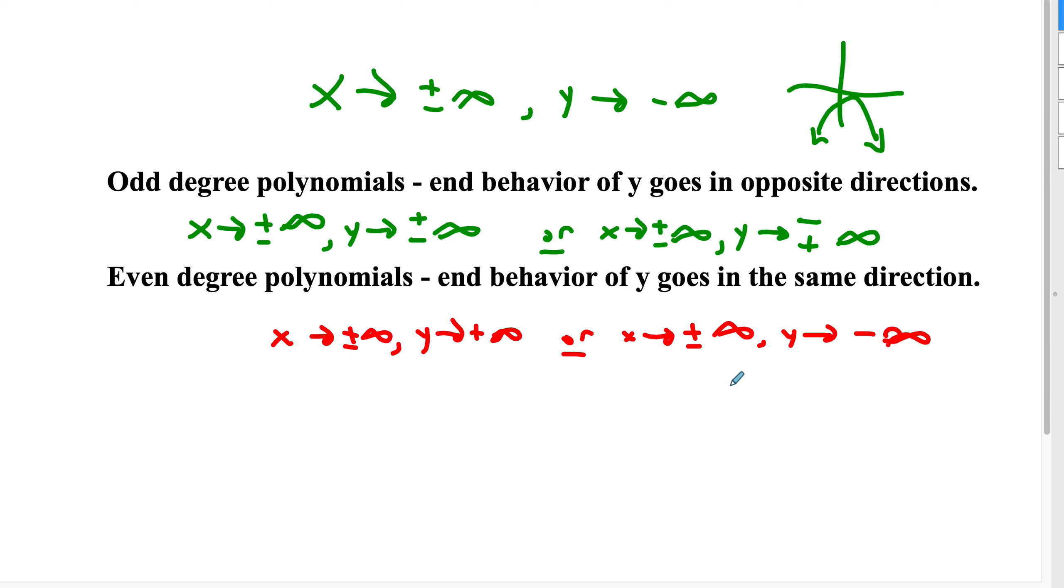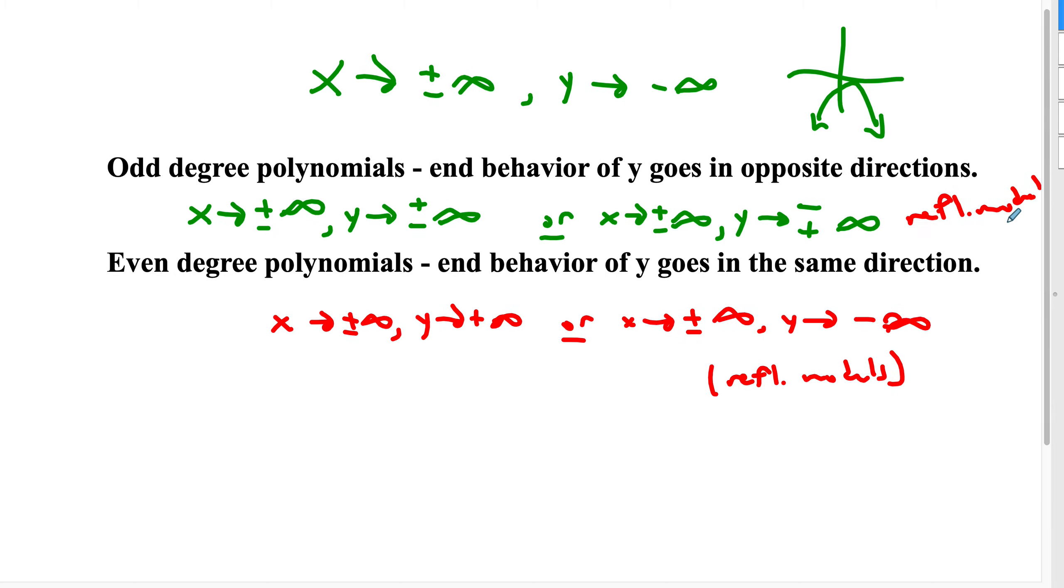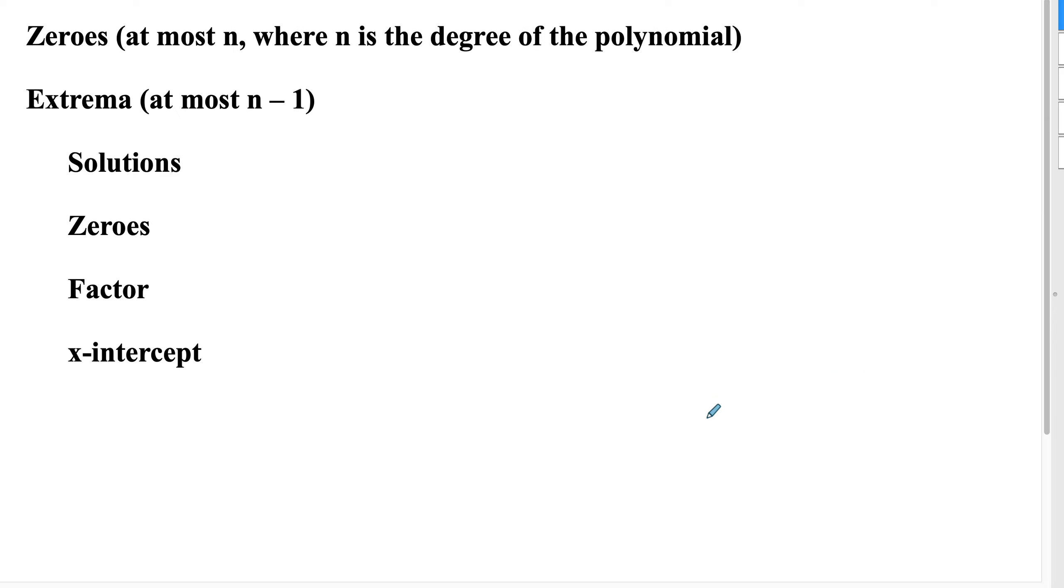As x goes to positive or negative infinity, y either goes to positive infinity, or y goes to negative infinity. Those are our options, depending on whether or not it's been reflected. In this case, these would be the reflected models. That is, the value of A is negative. That's not worth memorizing, per se. It's kind of common-sensical if you think about how graph transformations work.